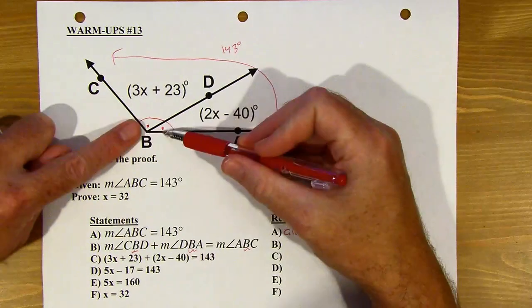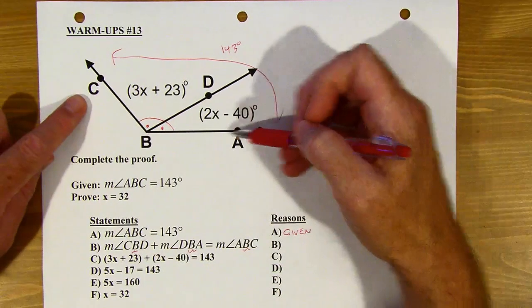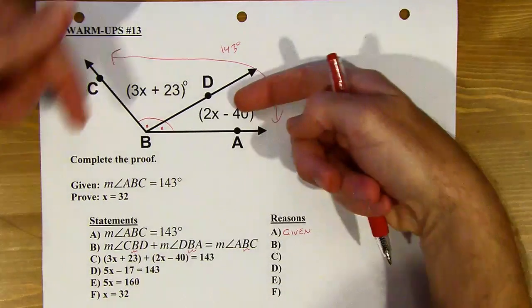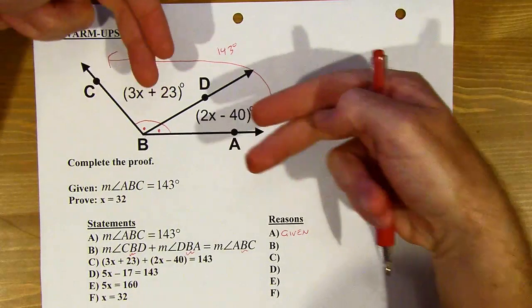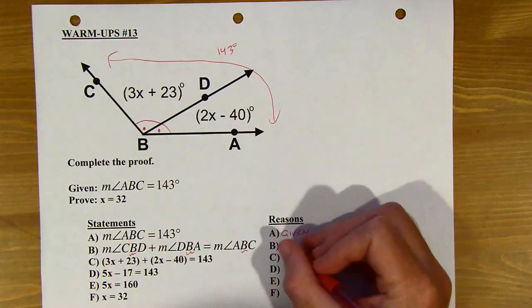So those two angles where I put the dot, if I add them together, then they're going to be equal to angle ABC, which is the big angle, right? Which is this bigger angle. So, hey, if you've got two angles that are adjacent to each other, next to each other, stick them together, you get a bigger angle.